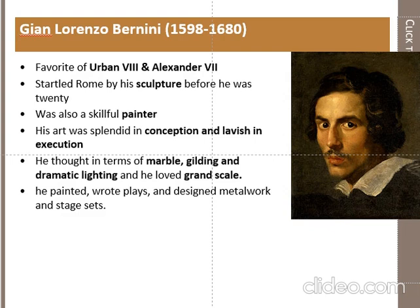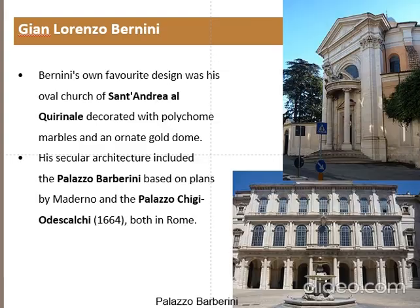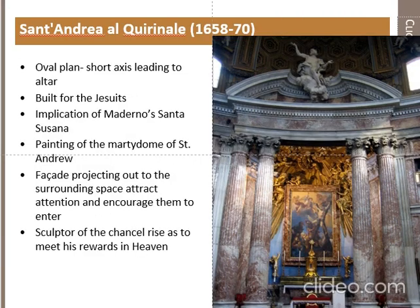He painted, wrote plays, and designed metalwork and stage sets. Bernini's own favourite design was Sant'Andrea al Quirinale. This church has been decorated with polychrome marble and a very ornate gold dome. His secular buildings include Palazzo Bernini and Palazzo Chigi Odescalchi, both located in Rome.